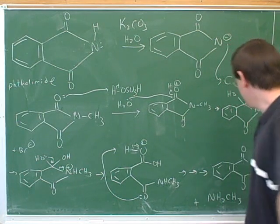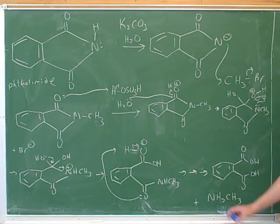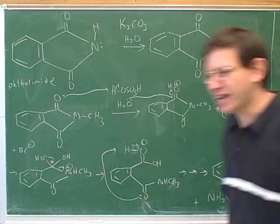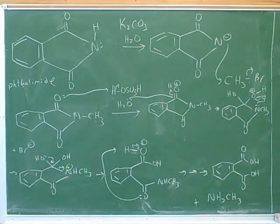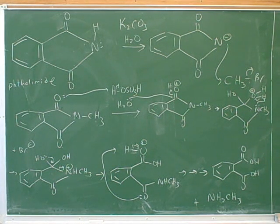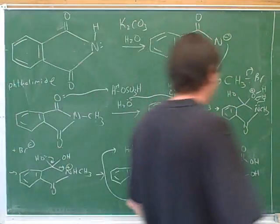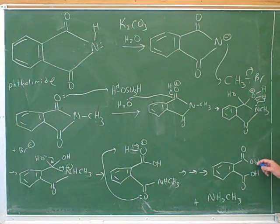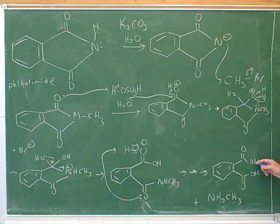So we've broken this off. Make sure you get the right number of hydrogens on your nitrogen at the end here. Did you guys ever finish this? What were our products here? NH2CH3? What type of functional group is this? Carboxylic acid. So in these conditions, should it be a carboxylic acid or a carboxylate? Carboxylic acid.